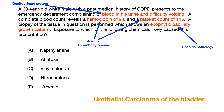So now the question is, which of the following chemicals is associated with urothelial carcinoma of the bladder? And the correct answer is naphthalamine.